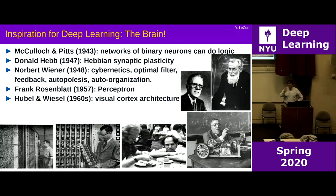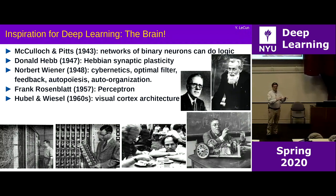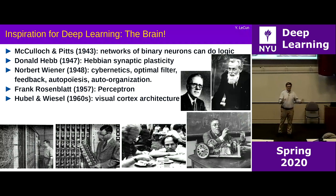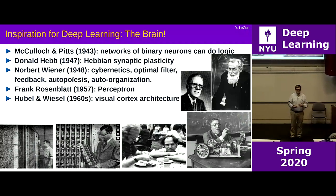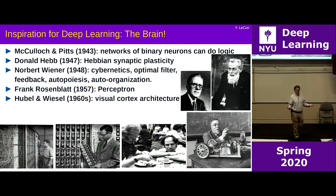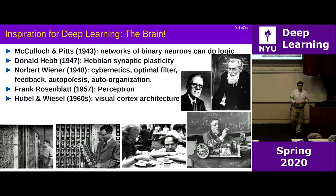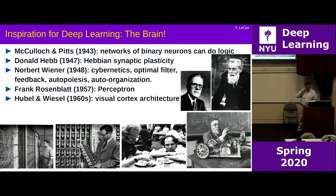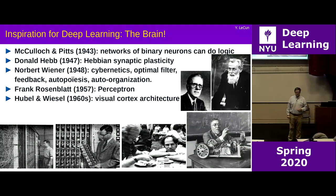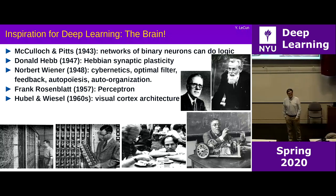Deep learning is inspired by what people have observed about the brain, but the inspiration is just an inspiration — the attempt is not to copy the brain. It's similar to airplanes being inspired by birds: the underlying principles are essentially the same, but the details are extremely different. They both have wings and generate lift, but airplanes don't have feathers and don't flap their wings. The history goes back to a field called cybernetics.